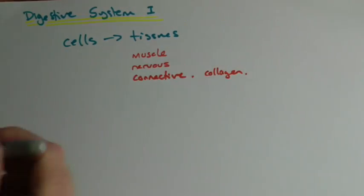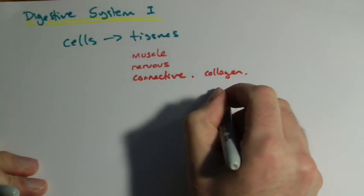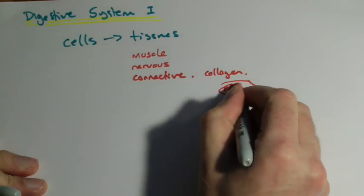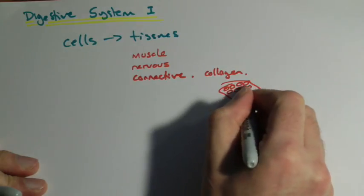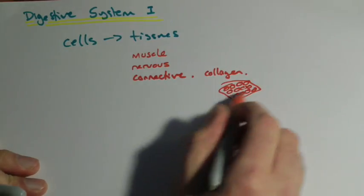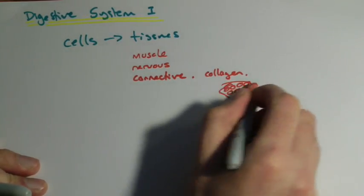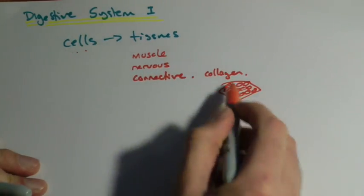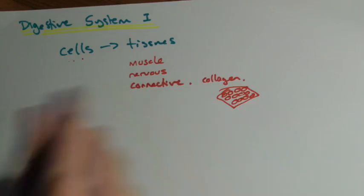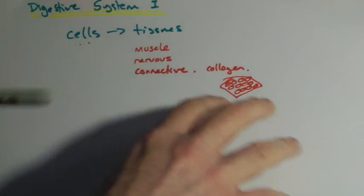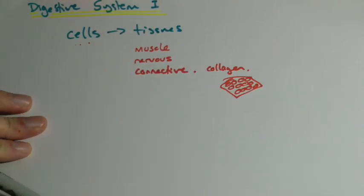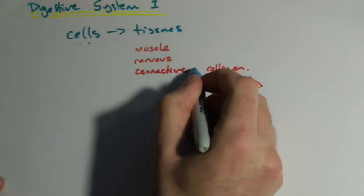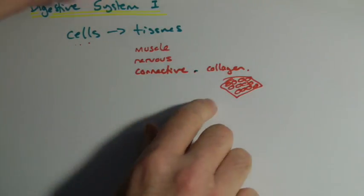I think one way you can maybe imagine your body is a bit like bubble wrap. The bubbles are like the cells, but the stuff it sits on is like connective tissue, like collagen. So your body is actually made up of loads and loads of this stuff, connective tissue.